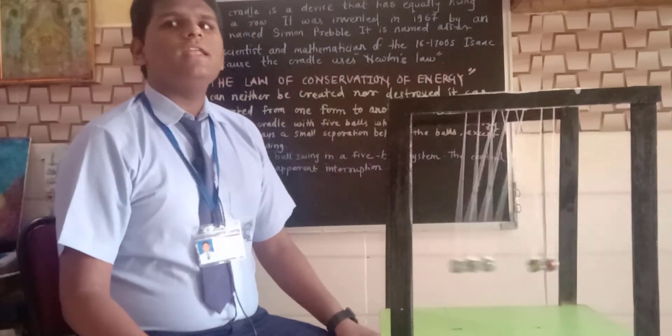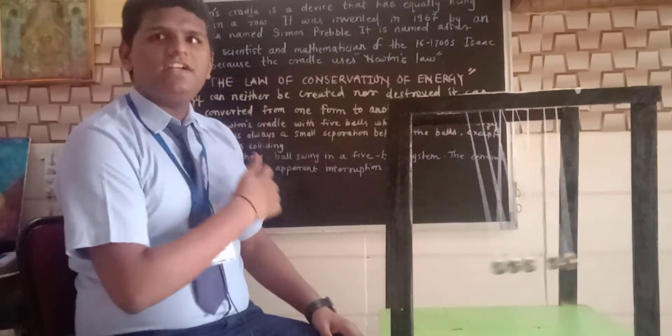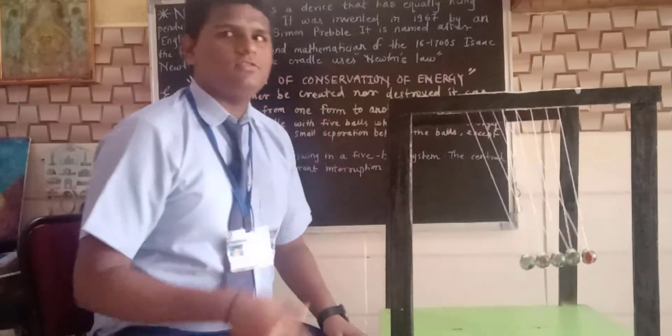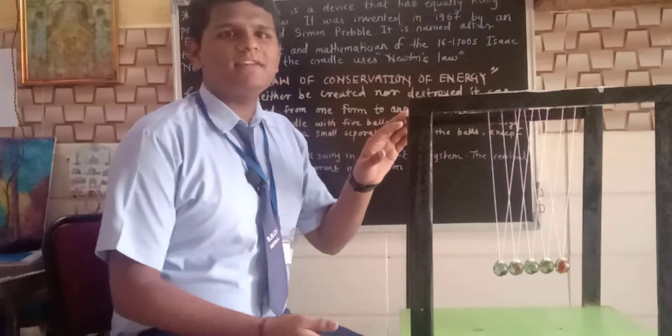In Newton's Cradle, three balls swing in a five ball system. The central ball swings without any apparent interruption. Thanks for looking at my science project.